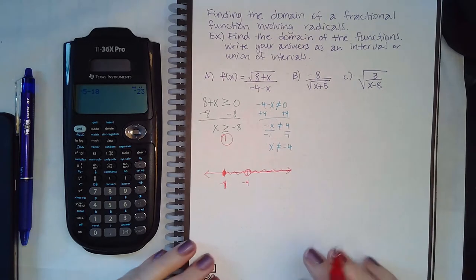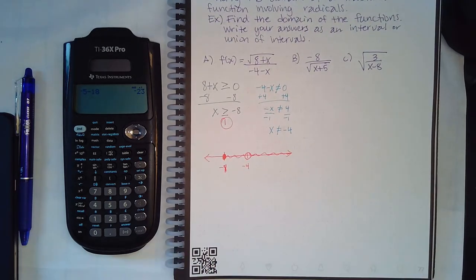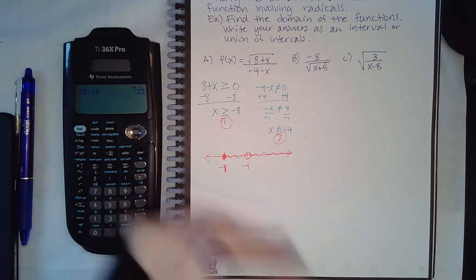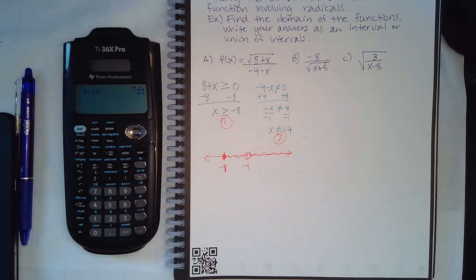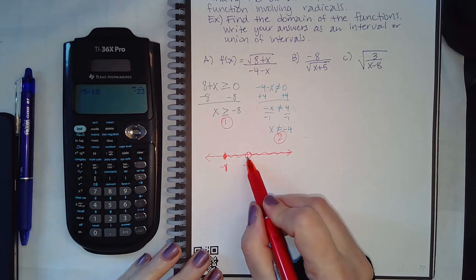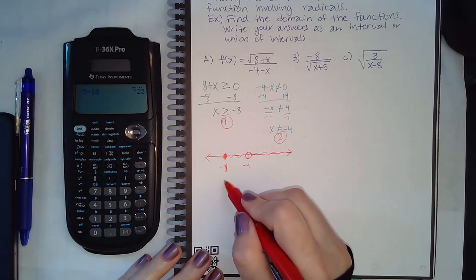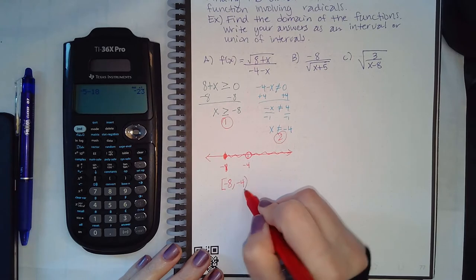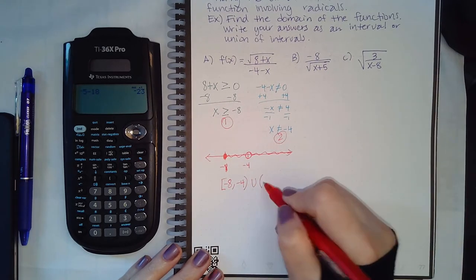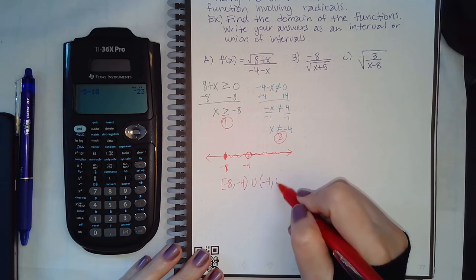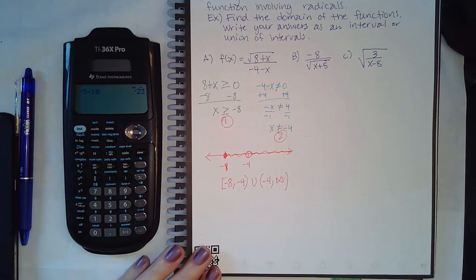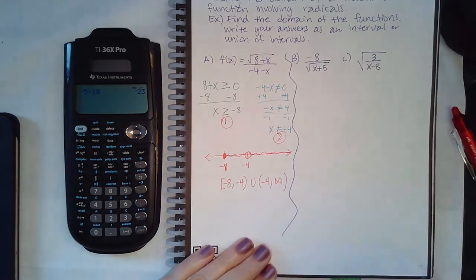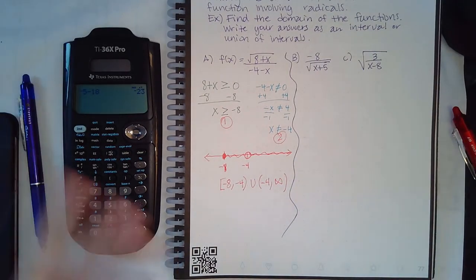And so what I need to do is I need to put this picture into interval notation. So I've got from here to here that stops there because there's a hole, so solid negative eight to negative four open, but then it continues on the other side of negative four and goes forever in that direction, the positive direction, so to positive infinity. Okay, so that's the first one.